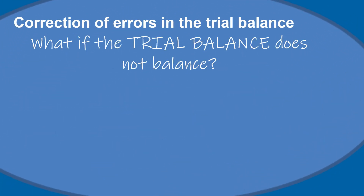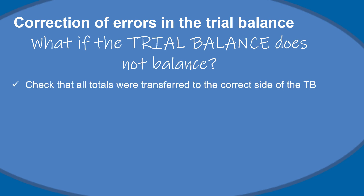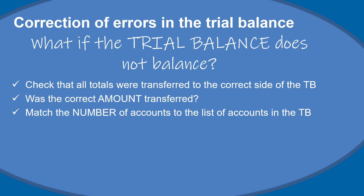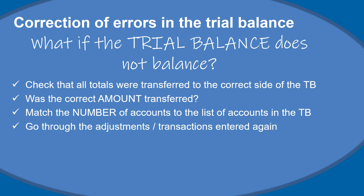When we look at the correction of errors in the trial balance, the question is: what if the trial balance does not balance? Because the trial balance is a list of accounts, the debits and the credits should be equal. If the trial balance does not balance, firstly check that you have transferred all the totals from the relevant accounts to the correct side of the trial balance — you have to check whether it is a debit or a credit. Also check whether the correct amount was transferred and whether you have matched the number of accounts to the list. It can happen that you've missed an account, so go through the adjustments again.